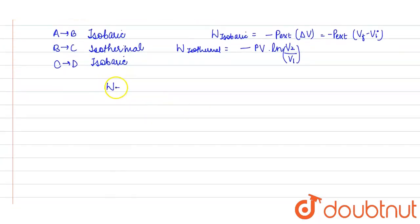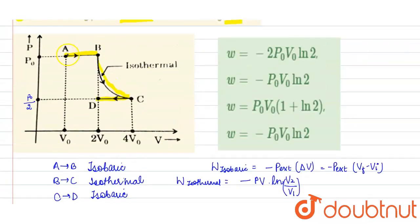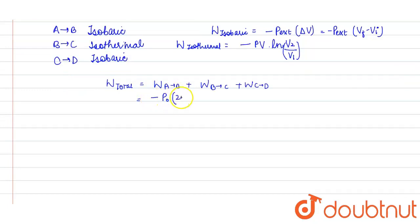For this particular curve, total work done can be written as: work done from A to B, plus work done from B to C, plus work done from C to D. From A to B, the pressure is p0 and the change in volume is 2V0 minus V0, so it equals minus p0 times (2V0 minus V0).